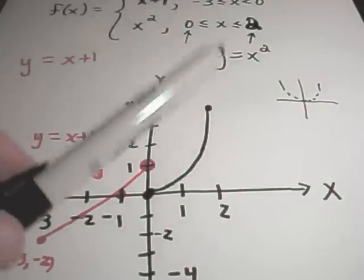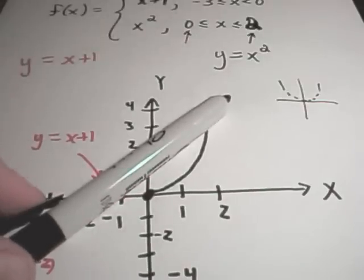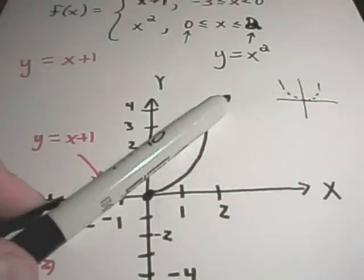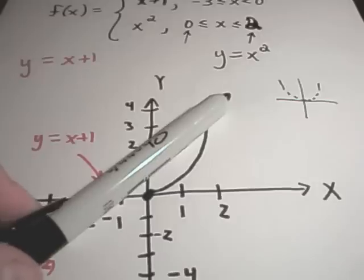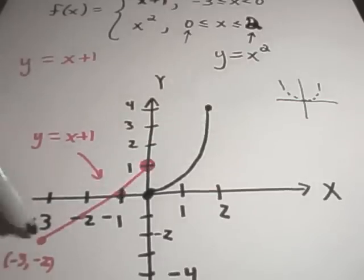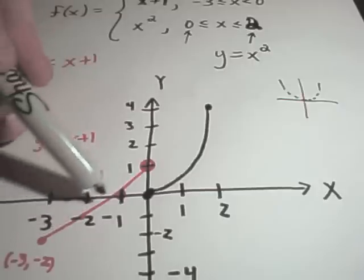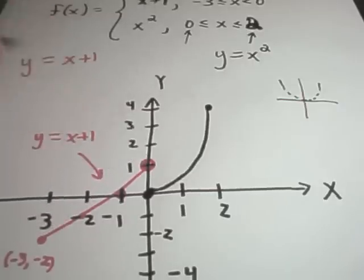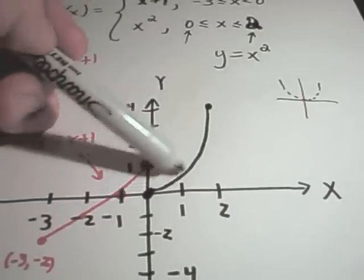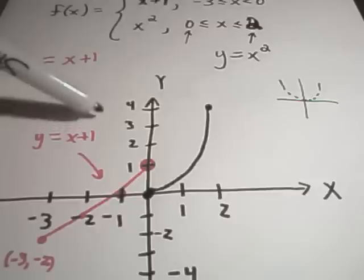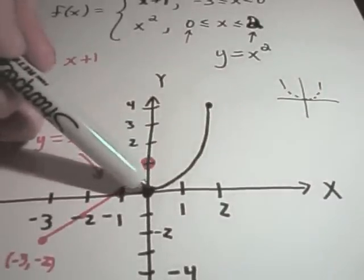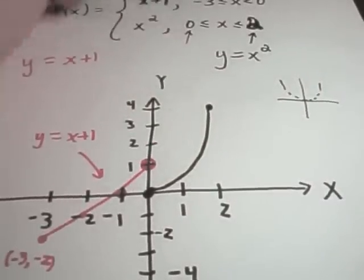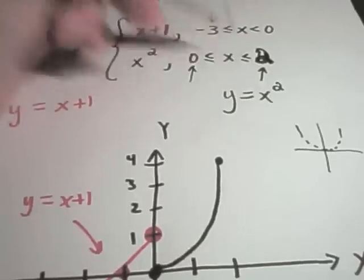Think about it this way: the graph of y equals x plus 1 is normally a full line, but you're chopping it off — you're only using the parts that correspond to x coordinates between negative 3 and 0. Likewise, y equals x squared is a full parabola, but you're only graphing the part that corresponds to x coordinates between 0 and 2.